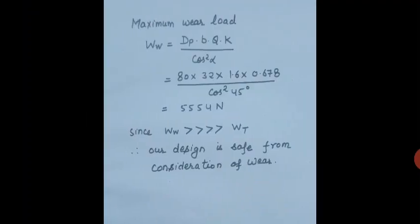Now we will calculate the maximum wear load. The equation is Ww equal to dp dot b dot Q dot K upon cos squared alpha. Putting dp equal to 80, face width equal to 32, Q equal to 1.6, K equal to 0.678, and alpha equal to 45 degree, we get maximum wear load equal to 5554 N. Since this maximum wear load is very much greater than the tangential load Wt, our design is safe from the consideration of wear. That is the solution to our design problem.